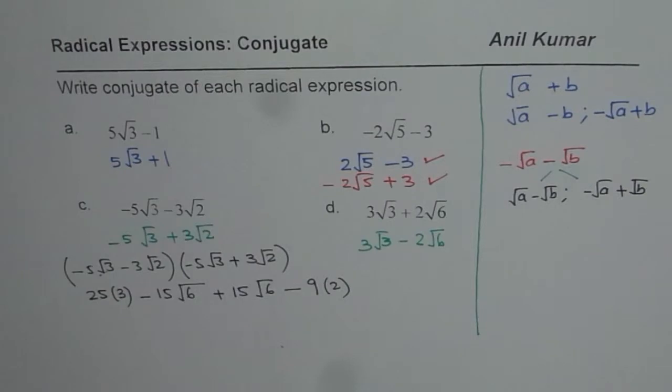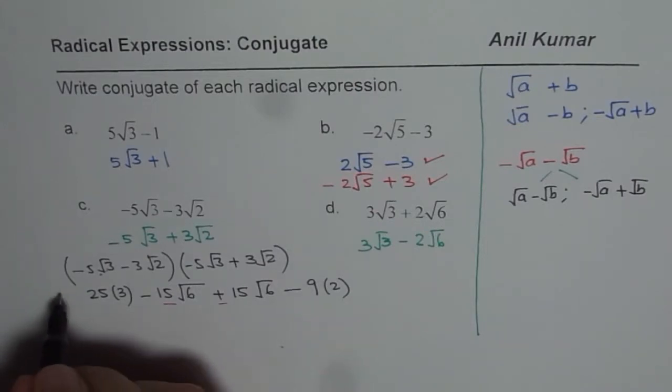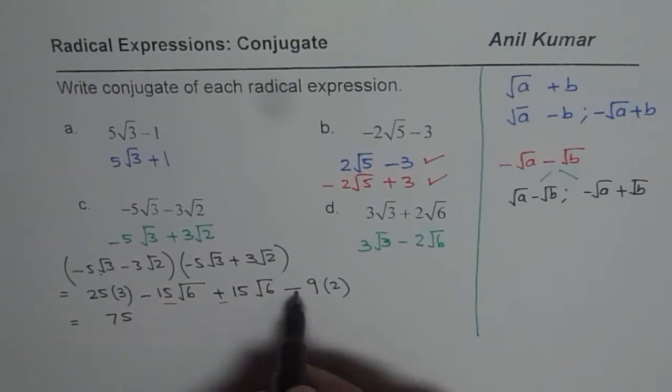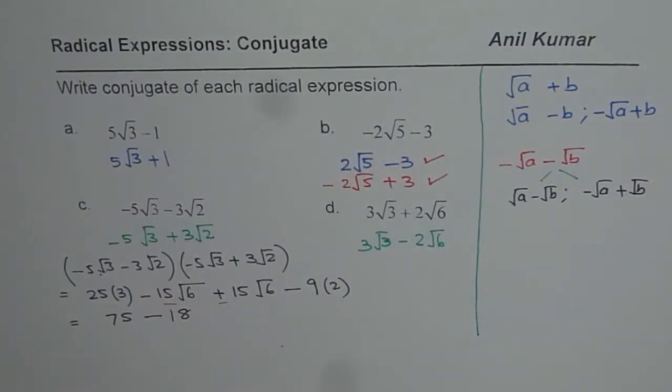As you can clearly see here, these two terms they cancel out. So what do you get? So we get this as equal to 25 times 3 is 75 minus 9 times 2 is 18. Do you get the answer? So we got rid of the radical part and that is what is your conjugate.